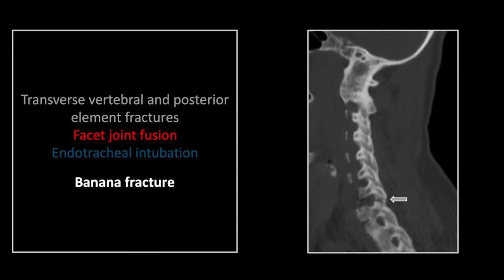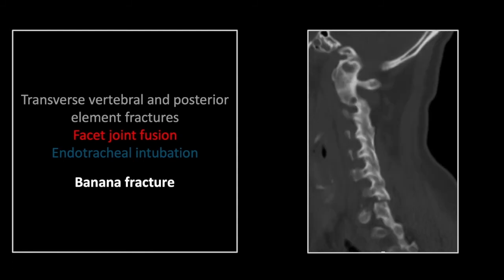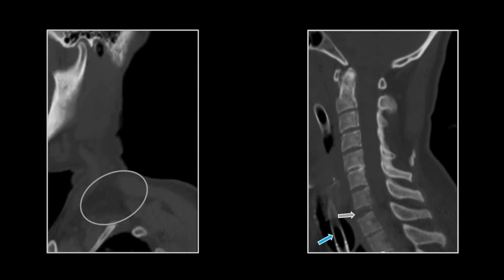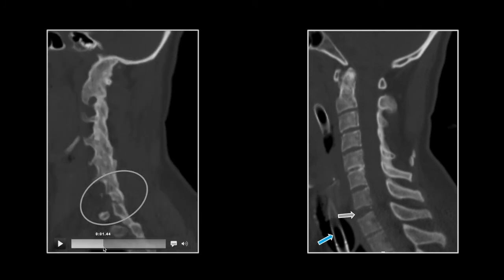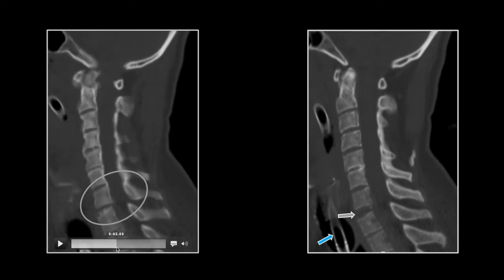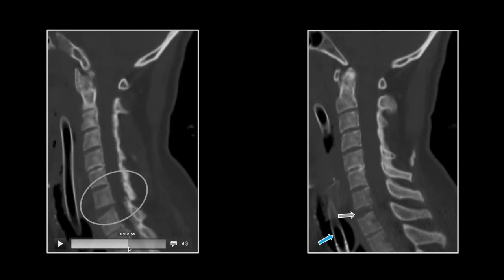The posterior element fusion is what really lets you nail the diagnosis of ankylosing spondylitis. You can see all the way up to the atlanto-occipital joints there is fusion of these synovial joints. The fracture involves the posterior elements on the opposite side as well, with fused facet joints. Here again is that banana fracture — you can see it through the posterior elements, but also appreciate that it goes through the vertebral column as well.